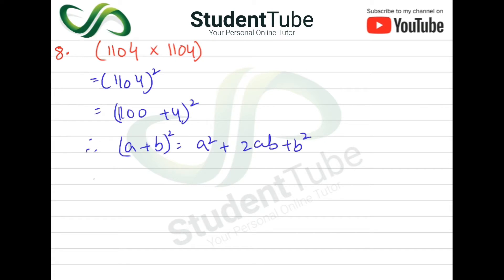What will happen here? A will be 1100 and B will be 4. So 1100 square plus 2, then we will get 1100, then we will go to B, then we will get 4 square.